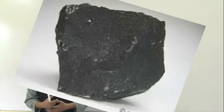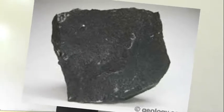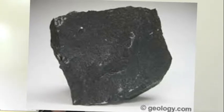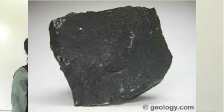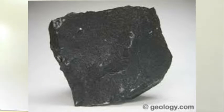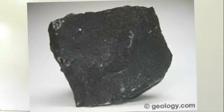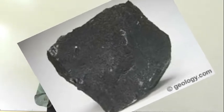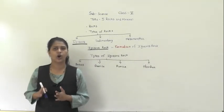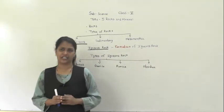The first type of igneous rock is basalt. Basalt is an igneous rock formed by the rapid cooling of lava on the Earth's surface. It is very dark and dense, and it has very sharp edges. This rock is also called scoria.